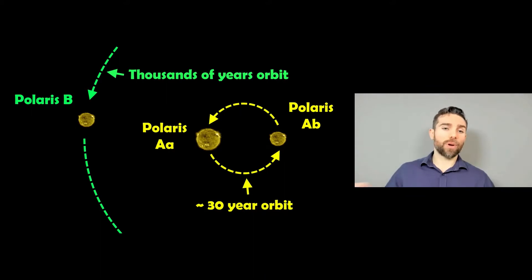Now the outer Polaris B takes thousands of years to orbit the common center of mass of the system. Whereas the central two, Polaris Aa and Polaris Ab, their orbital period is about 30 years. So much faster than the outer one. That's because they're closer together. The other one is much further away, so a much wider orbit.